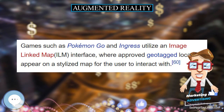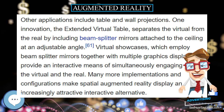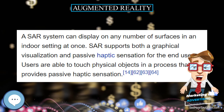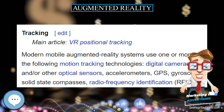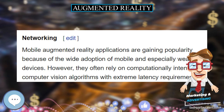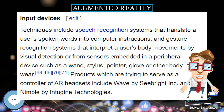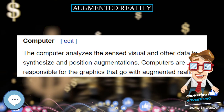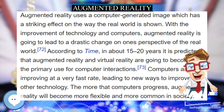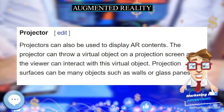Usually those methods consist of two parts. The first stage is to detect interest points, fiducial markers, or optical flow in the camera images. This step can use feature detection methods like corner detection, blob detection, edge detection, or thresholding and other image processing methods. The second stage restores a real-world coordinate system from the data obtained in the first stage. Some methods assume objects with known geometry or fiducial markers are present in the scene. If part of the scene is unknown, simultaneous localization and mapping (SLAM) can map relative positions. If no information about scene geometry is available, structure from motion methods like bundle adjustment are used.